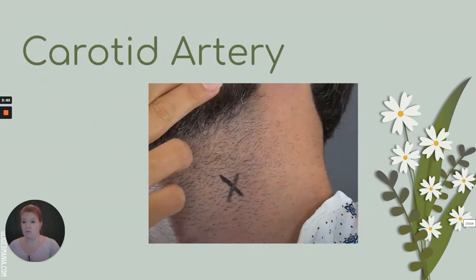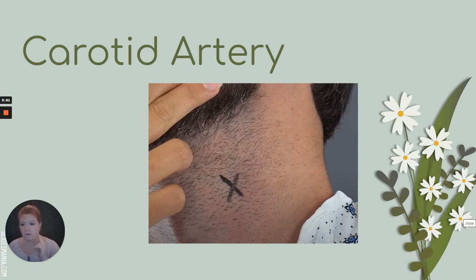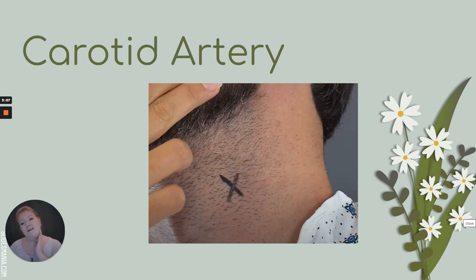So how do we do it? For the carotid artery, here's the jaw, and right down here you're going to feel the pulse. Sometimes you may have to move your fingers around to find the good spot, but it's not in the front of your neck — it is on the side here.